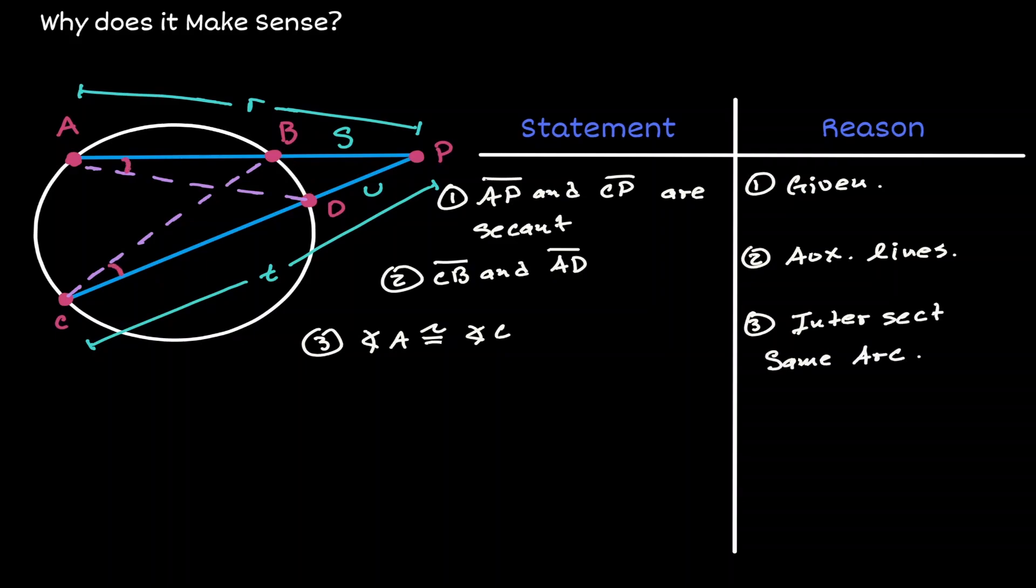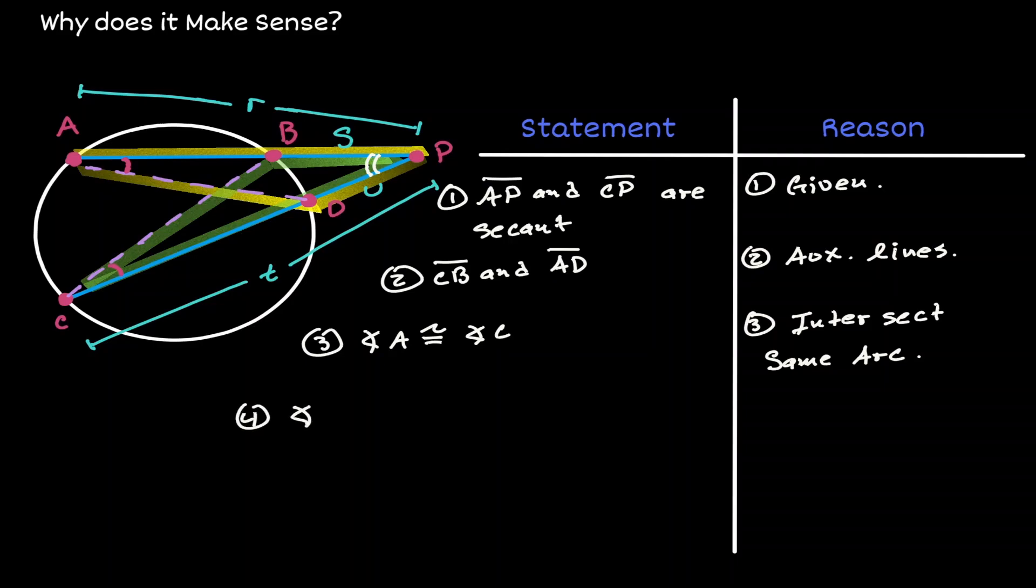We also have two triangles: triangle ADP and triangle CBP. Those two triangles share angle P, so we can say that angle P is congruent to itself by the reflexive property.